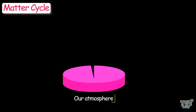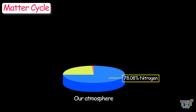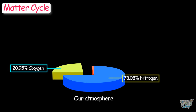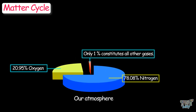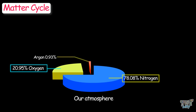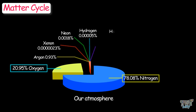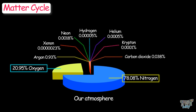We studied the composition of our atmosphere. It is 78.08% nitrogen and 20.95% oxygen — that is about 99% of the atmosphere, and only 1% constitutes all other gases, like argon, xenon, neon, hydrogen, helium, krypton, and carbon dioxide. And the composition never changes.